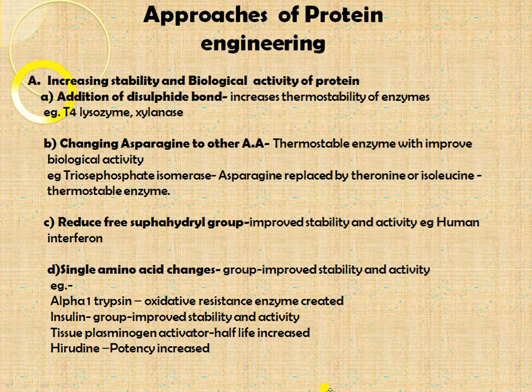Different approaches to protein design include: first, increasing the stability and biological activity of the protein by making slight changes to the protein structure. One approach is the addition of disulfide bonds, which increases the thermostability of the enzyme — examples include T4 lysozyme and xylanase. Another approach is changing asparagine to other amino acids — replacing asparagine in the protein structure with another amino acid produces thermostable enzymes with improved biological activity.